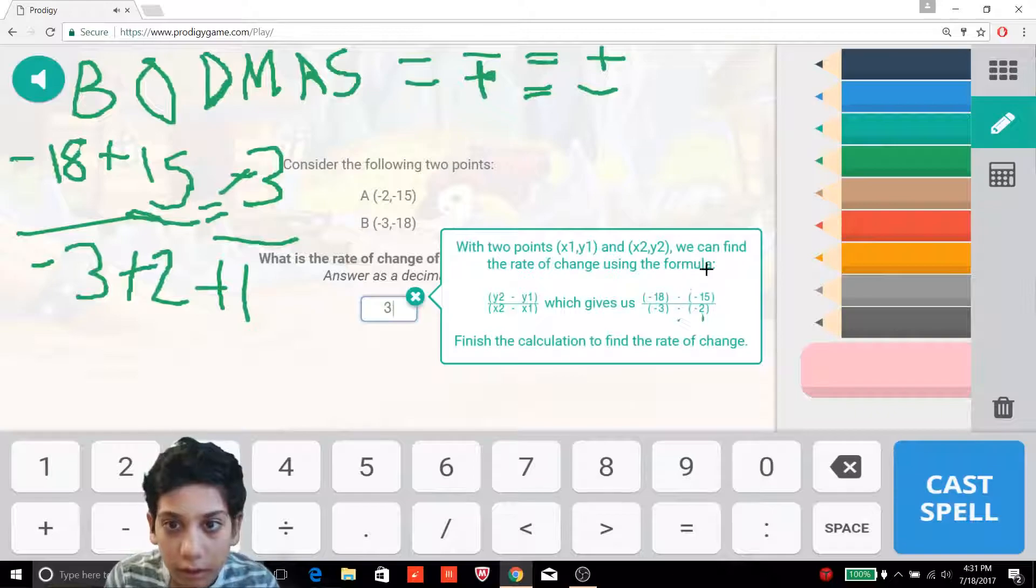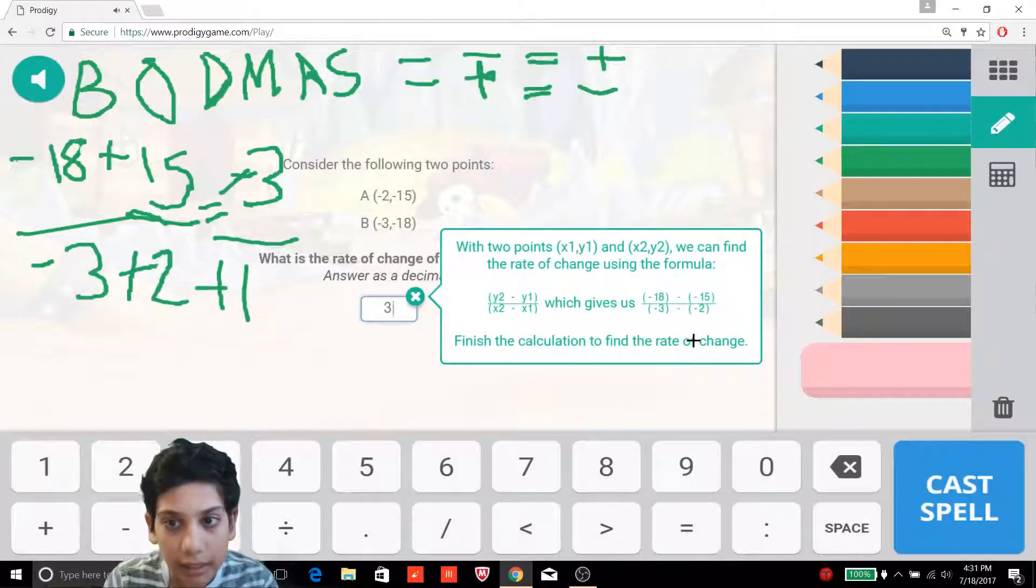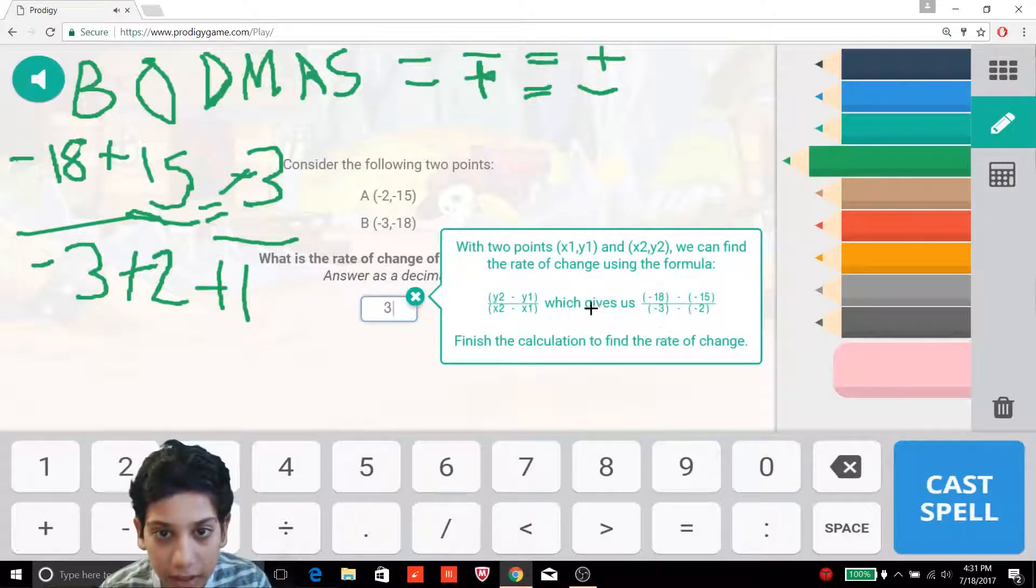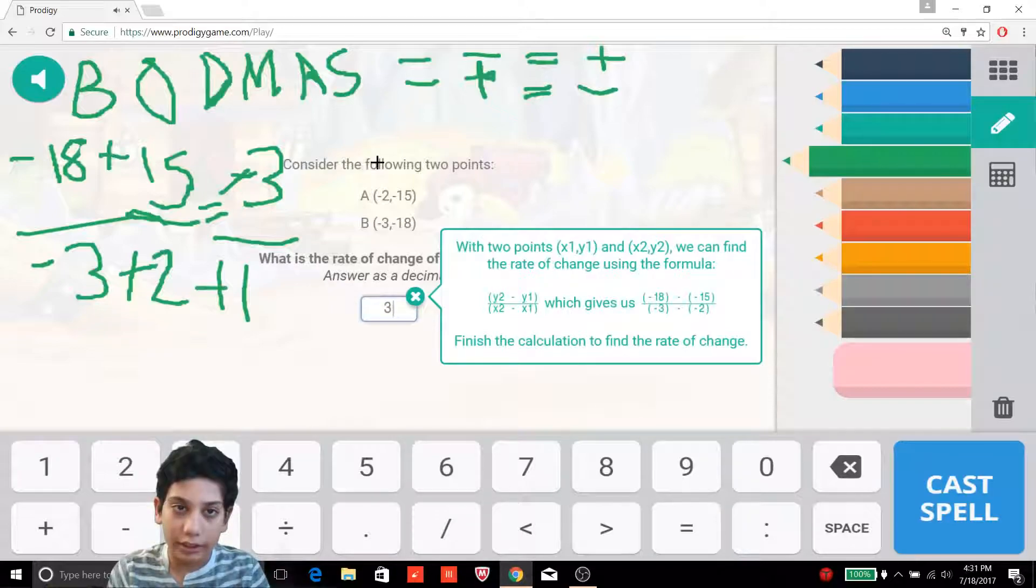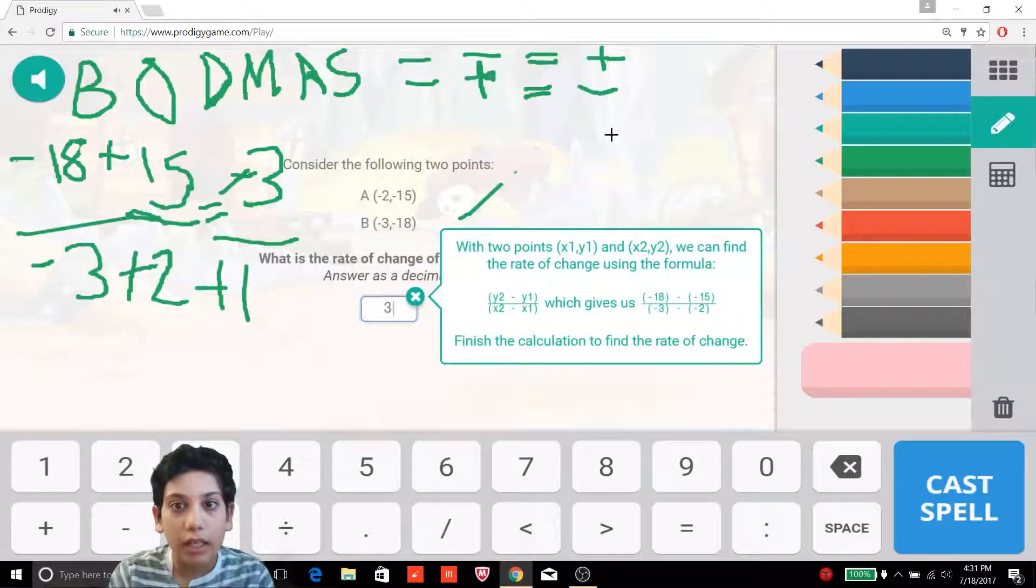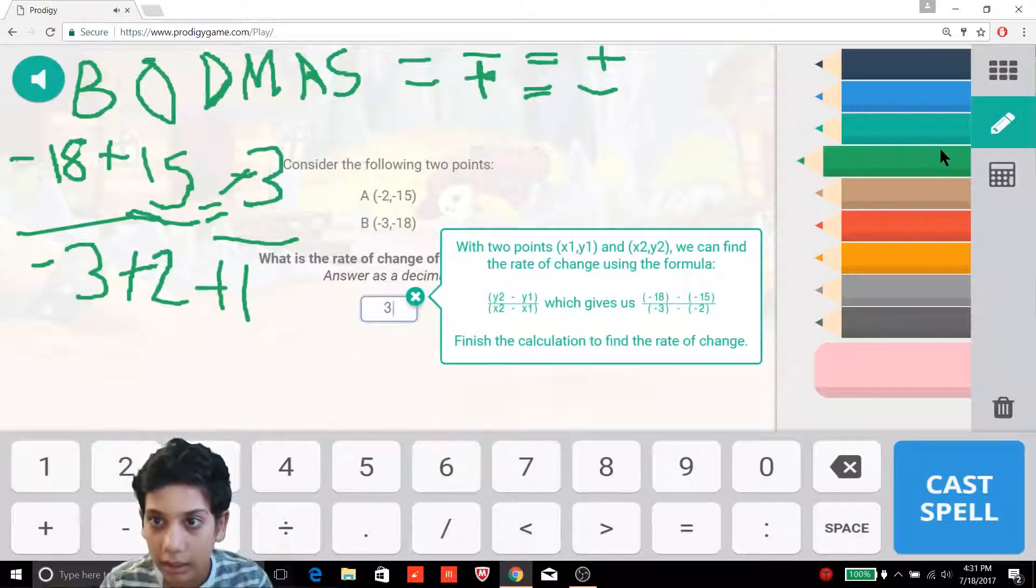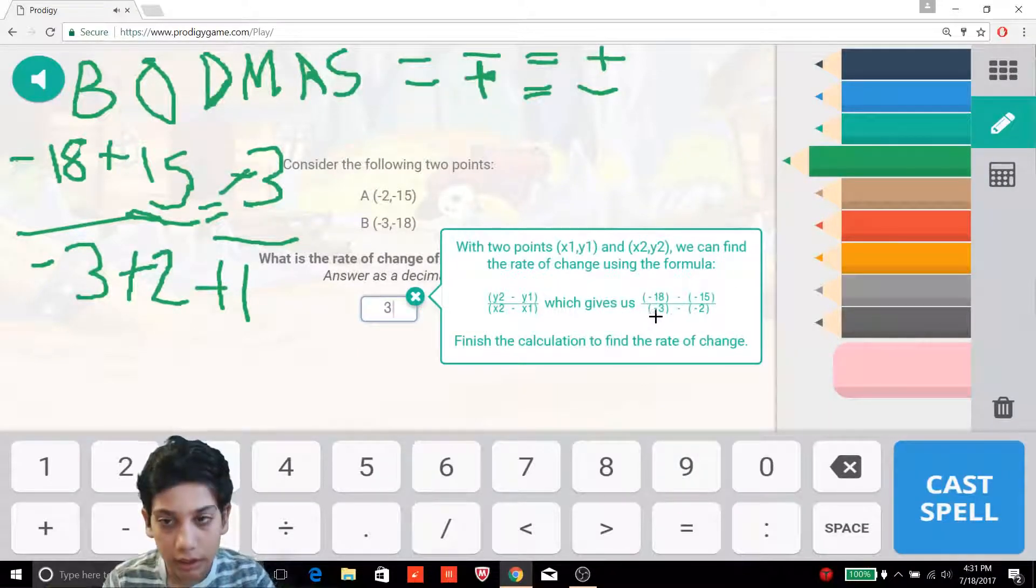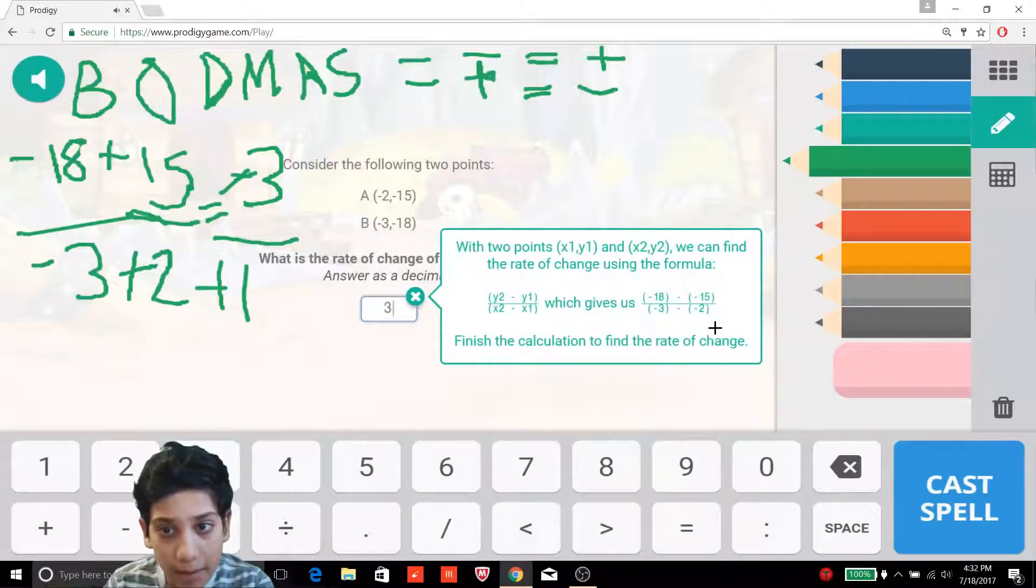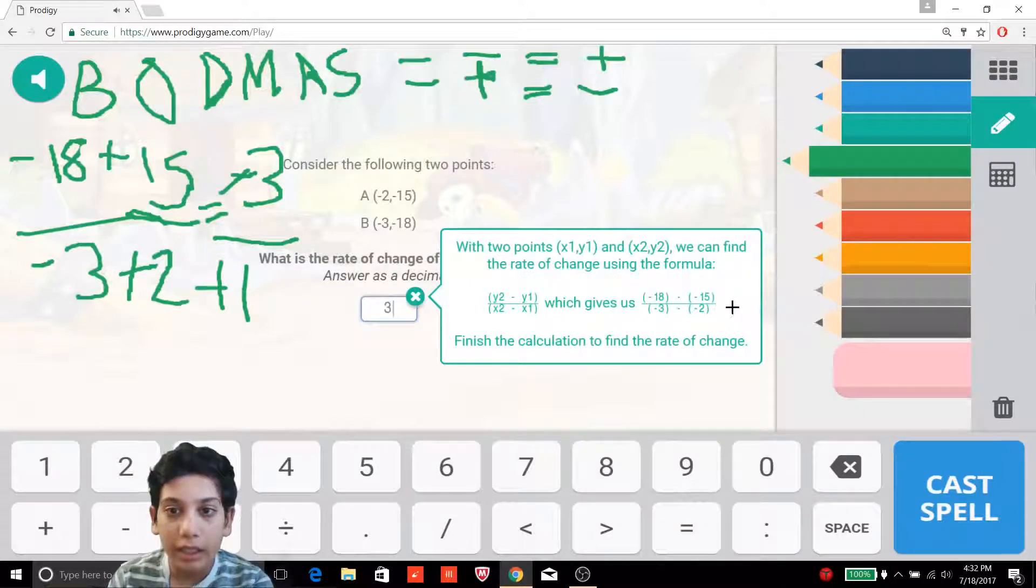And I got that because there are two positions: there's the x position and the y position. So I made brackets for each one and I put minus 3 and minus 18. So minus 3 is x2 and minus 18 is y2. Minus 2 is x1 and minus 15 is y1. So now we got that done.